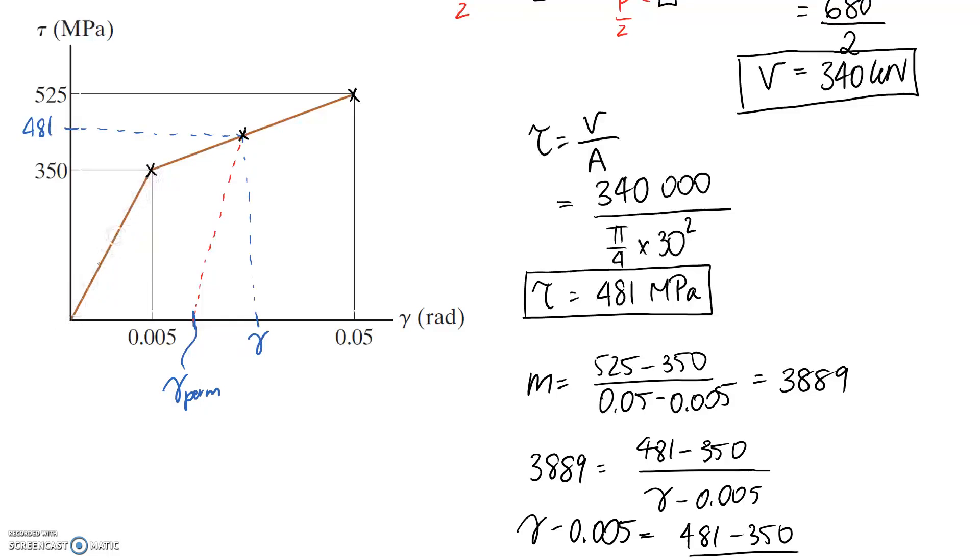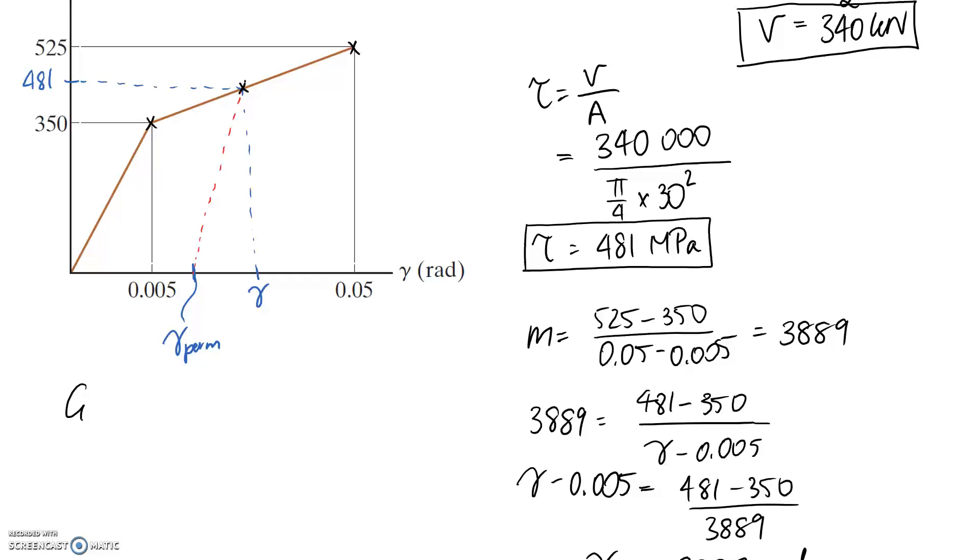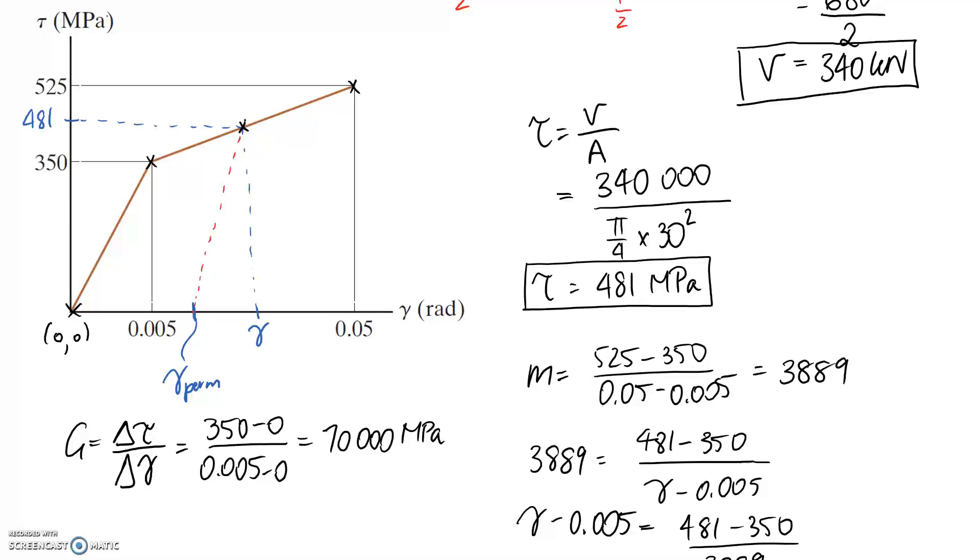In order to do this, what we need to do is start by finding the gradient through our elastic section, because it's going to have the same gradient through here. So we can get this by knowing that G, the gradient through here, is equal to the change in stress divided by the change in strain. So this is going to be the 350 minus 0 divided by the 0.005 take 0, because I'm using this point down the bottom. And we find out that G is about 70,000, and the units are going to be in megapascals since our axis for tau was also in megapascals.